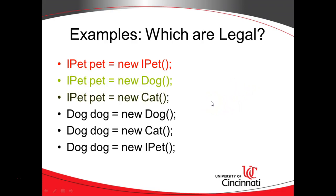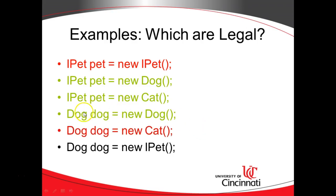How about 'IPet pet = new Cat'? That is also legal because, just like Dog, Cat implements IPet. Now, 'Dog dog = new Dog' — can we make both variable type and object type Dog? Yes, this is an easy one; unless it's an abstract class, this is legal because all methods available on the variable type Dog are also available on the object type Dog. What about 'Dog dog = new Cat'? The variable type is Dog, the object type is Cat — this is not legal. Dog has a method called bark and Cat has a method called meow, but Dog does not have meow and Cat does not have bark, so our relationship is broken.